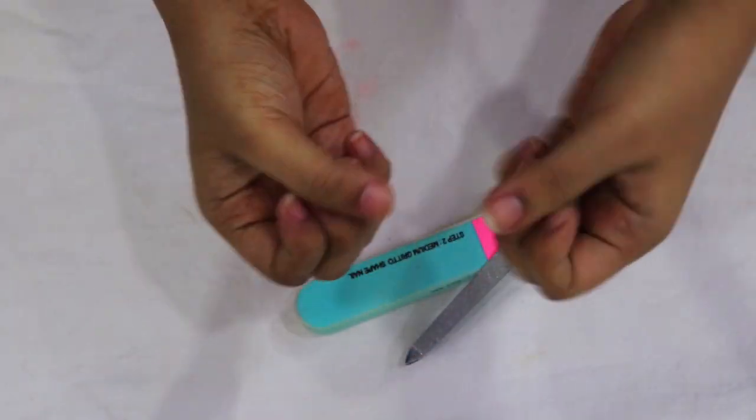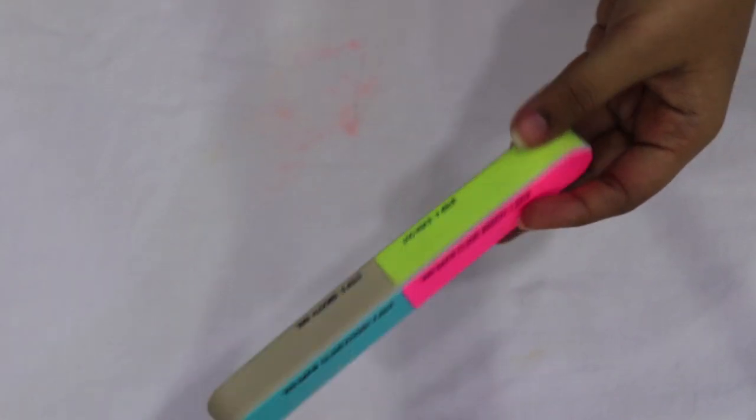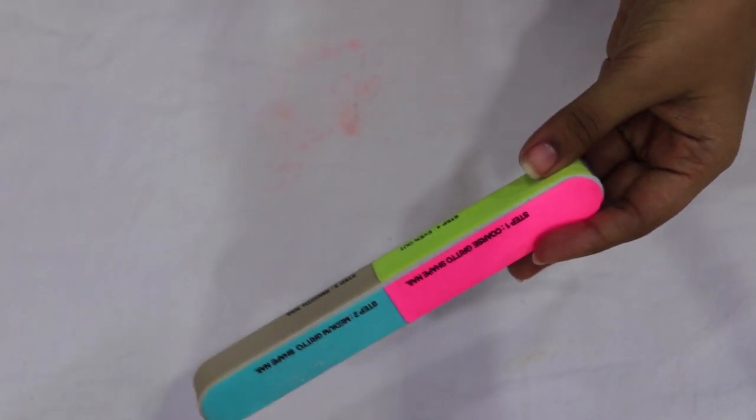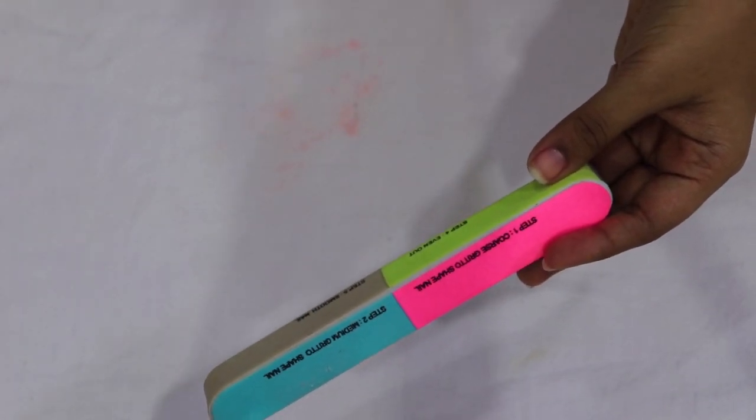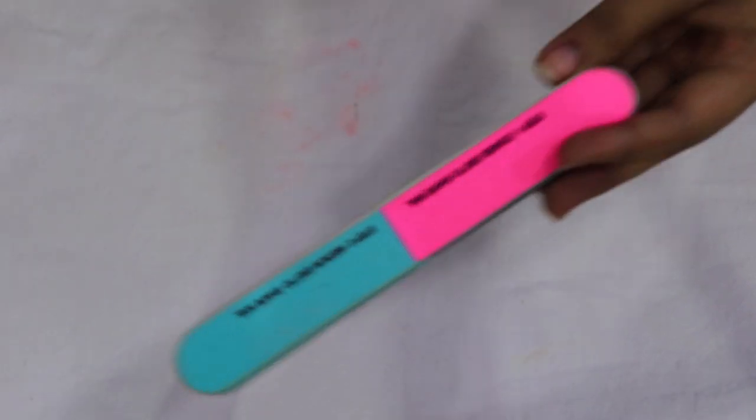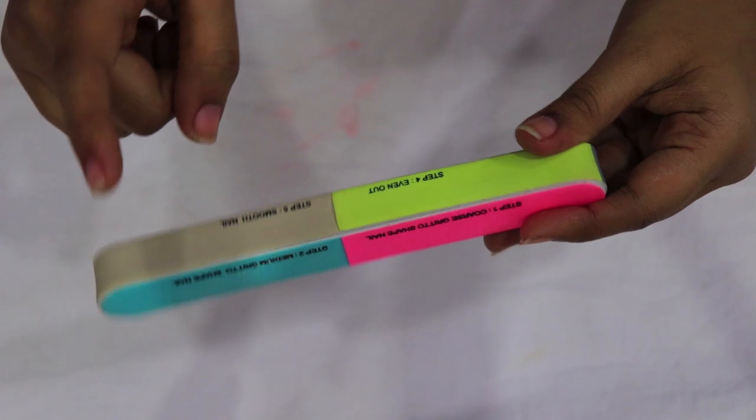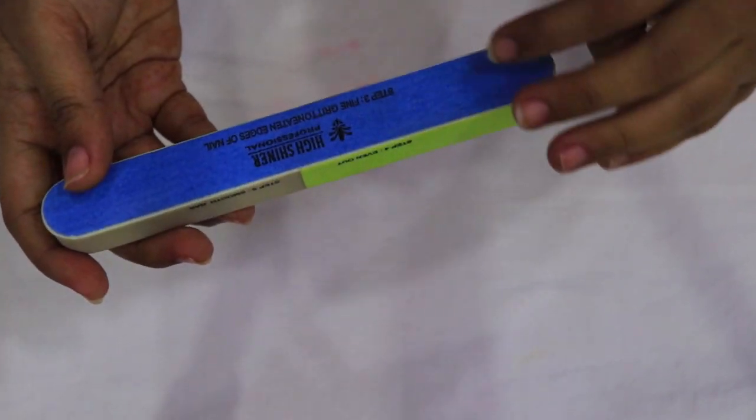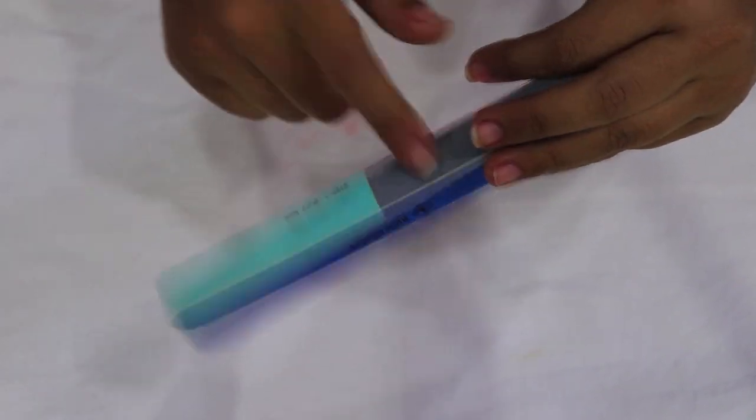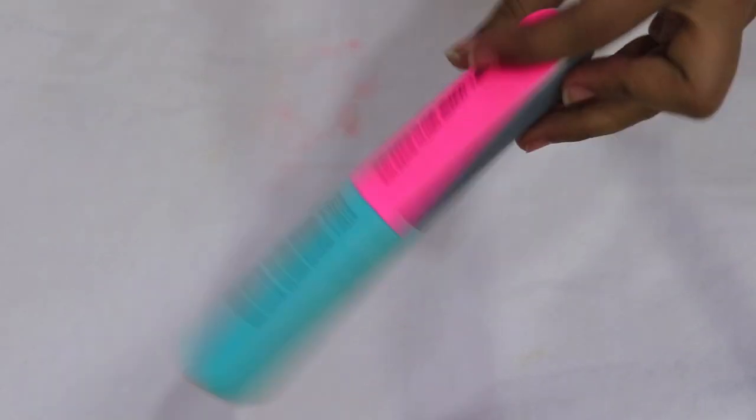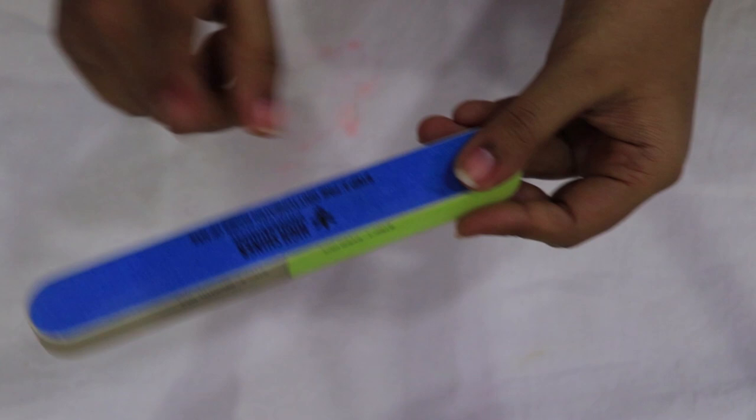Okay, it's done. The next step is using this buffer. I have ordered this buffer from Nykaa. I'll put the link in the description box. It has written on it step one, step two, step three, step four, step five, step six, and step seven. You have to just follow the steps.